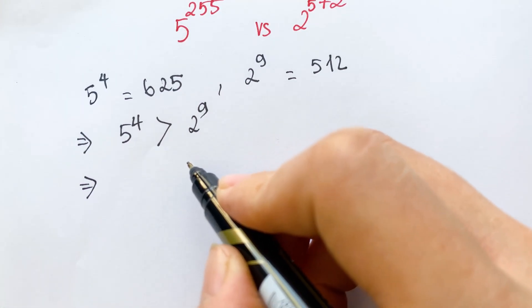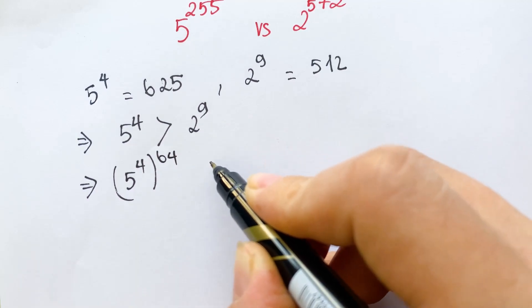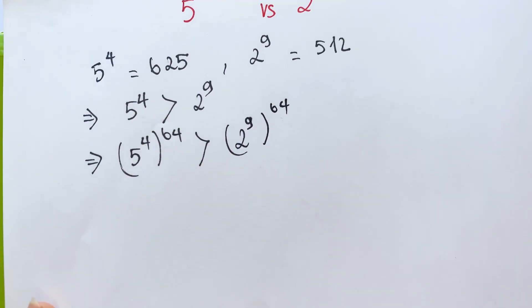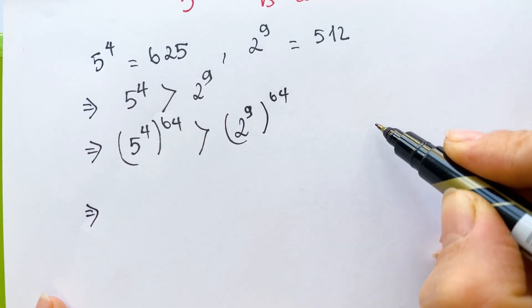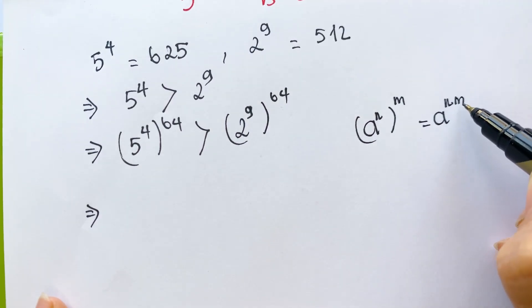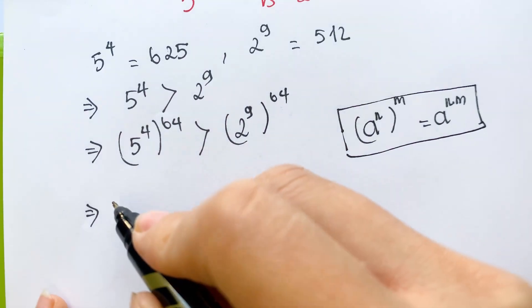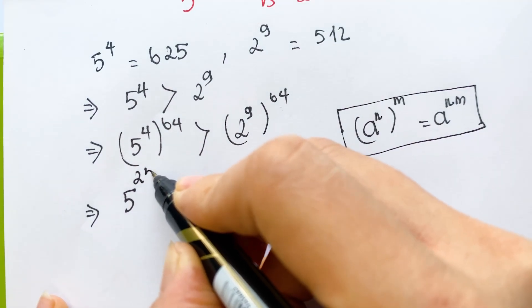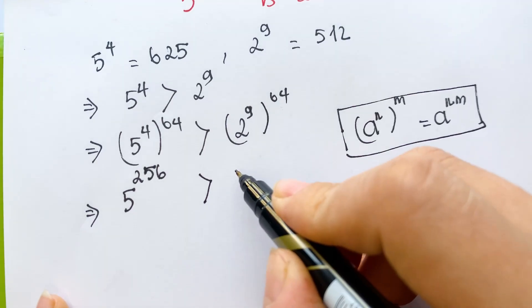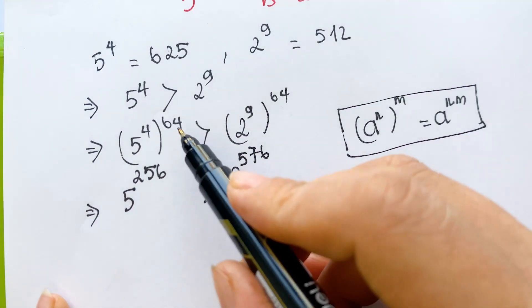We need to take the power of 64 for both sides. Therefore we have 5 power 4, all to the power 64, greater than 2 power 9, all to the power 64. Using the rule that a power n, all to the power m, equals a power n times m, we get 5 power 2256 greater than 2 power 576.